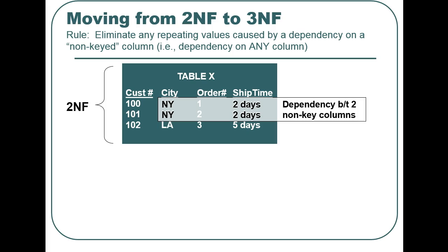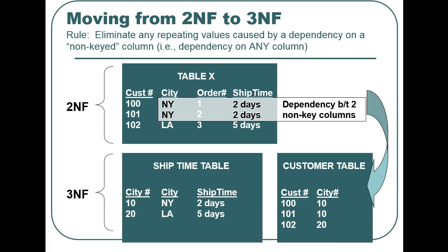To enforce the rule, we again break the table into two separate tables: a customer table and a ship time table. Now, if shipping times change for a particular city, we only have to make the change in one place.